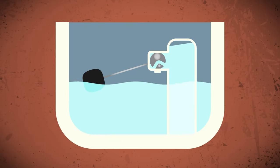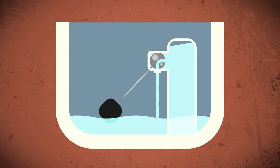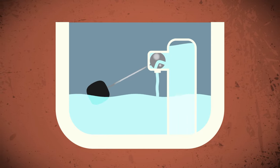What Crapper did invent was the float valve, a plug inside the water tank that keeps the toilet bowl from overflowing. Nifty!